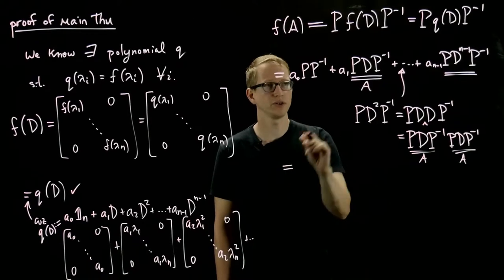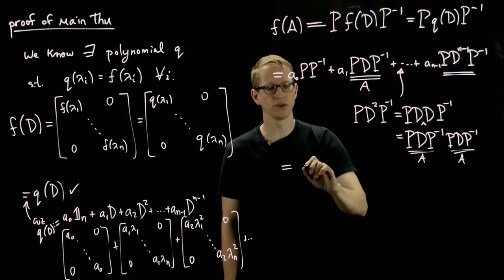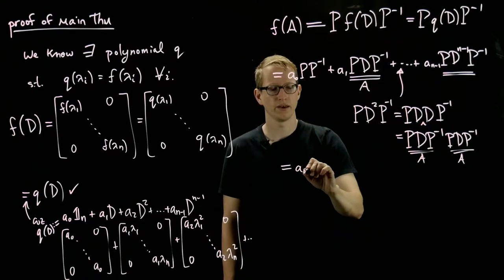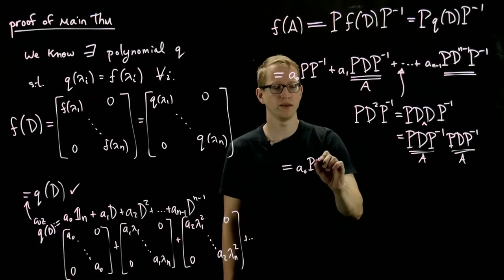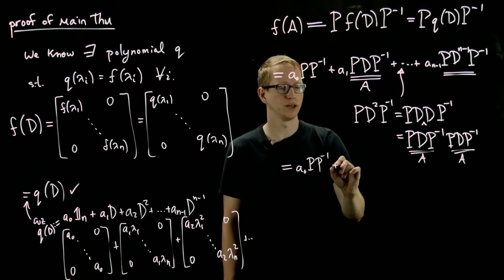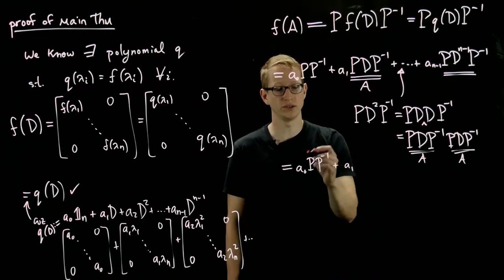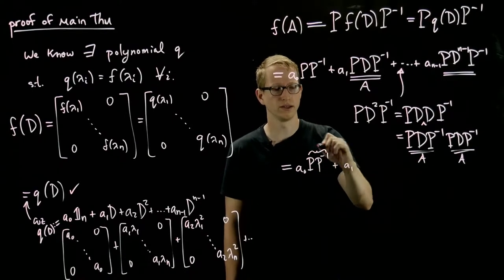Therefore, when we actually write out what all of these things equal, we get A0 P P inverse plus A1, which is the identity. This is the identity matrix.